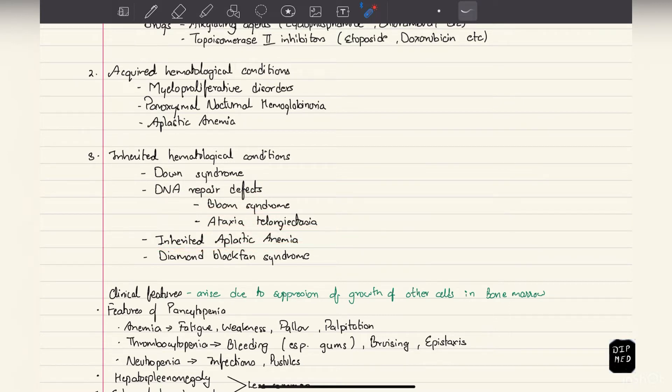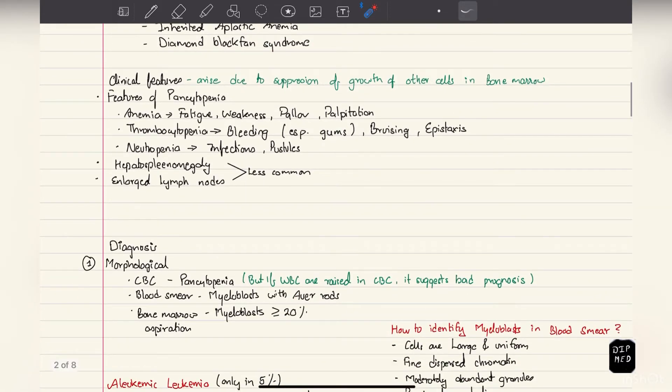Now on to the clinical features of AML. Most of these clinical features arise due to suppression of growth of other cells in the bone marrow, so we see features of pancytopenia. If there is anemia, there will be fatigue, weakness, pallor, and palpitation. Thrombocytopenia will present as bleeding, especially gum bleeding, bruising, and epistaxis. In neutropenia there can be infections, but these are usually mild, and also there can be pustules. Hepatosplenomegaly and enlarged lymph nodes are less common.